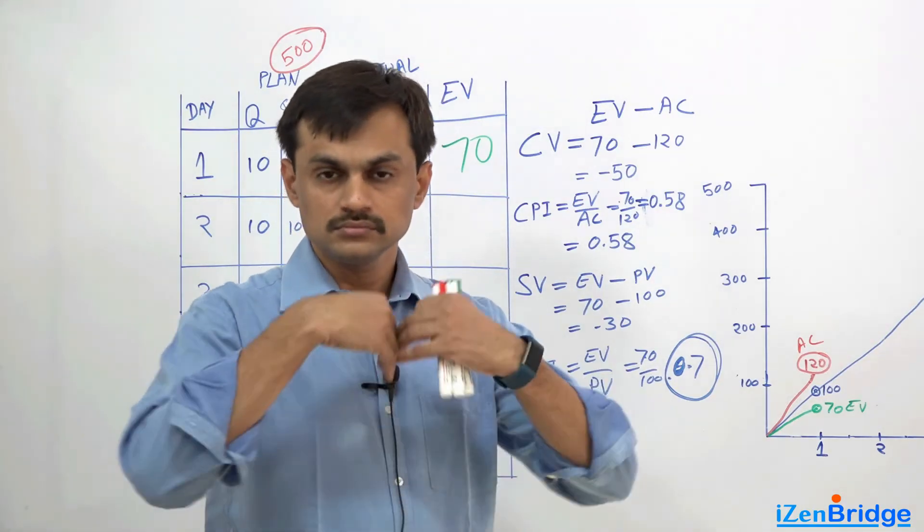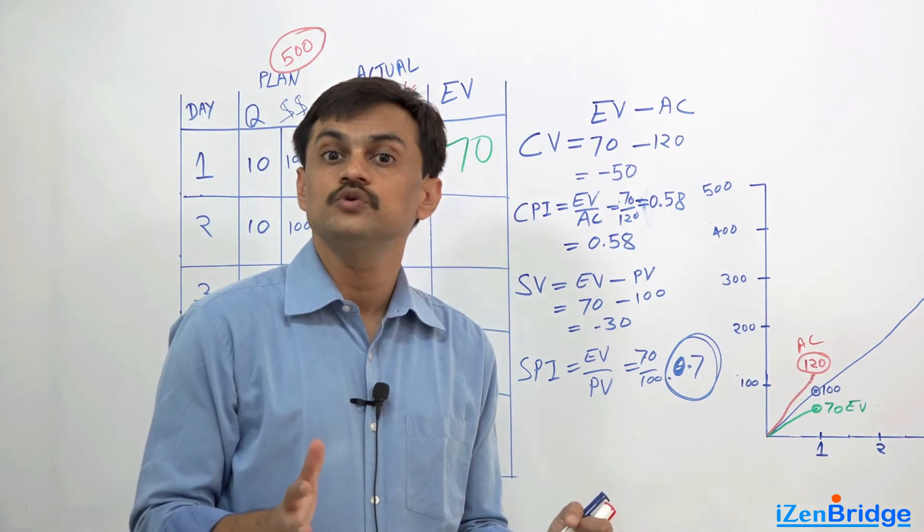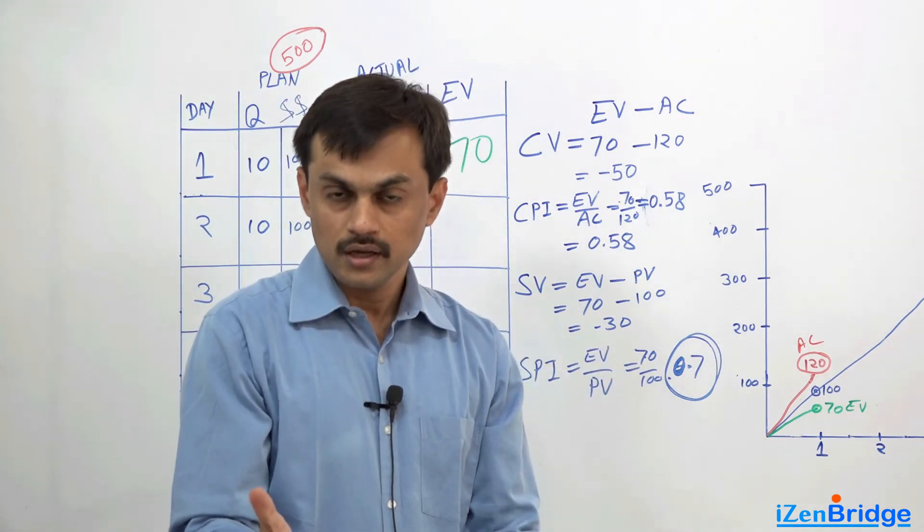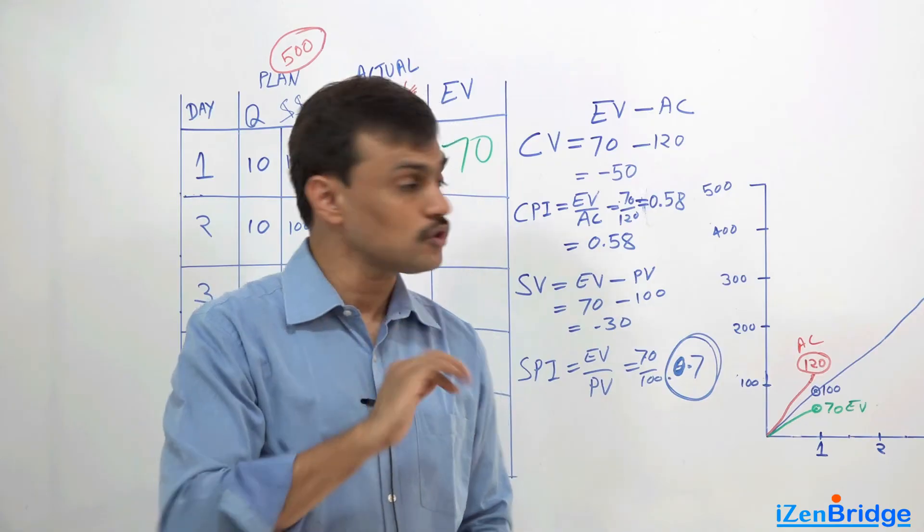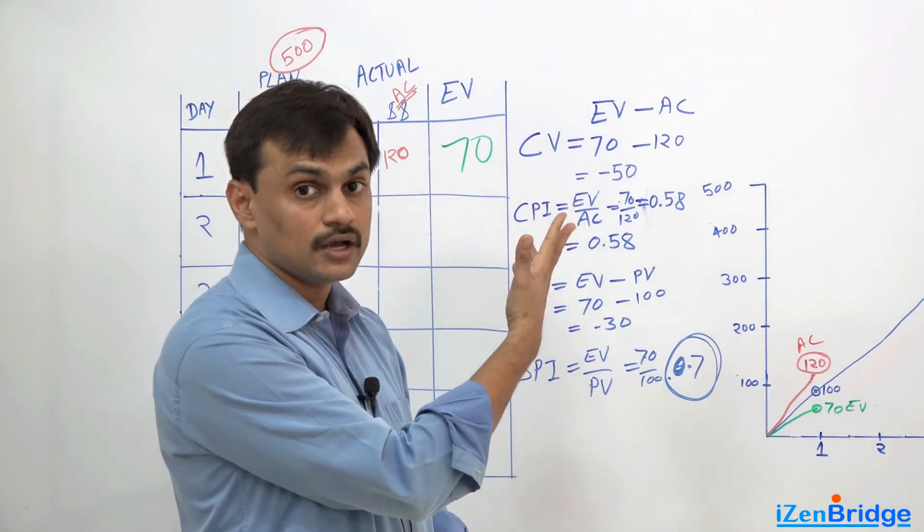Now if we do 20 machines, our earned value would have been 200 irrespective of actual cost, because cost is somewhere going in a cost performance index.